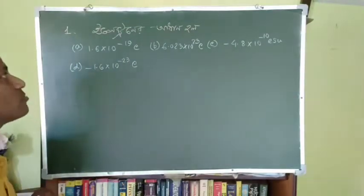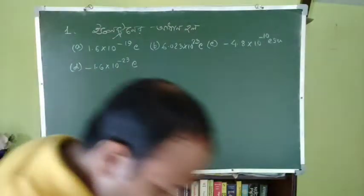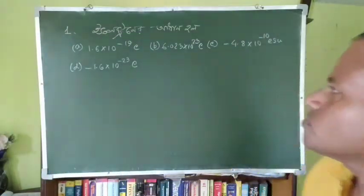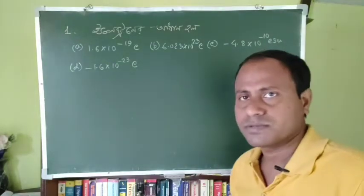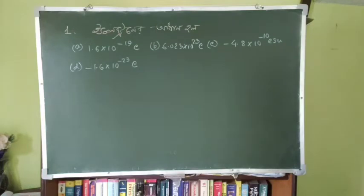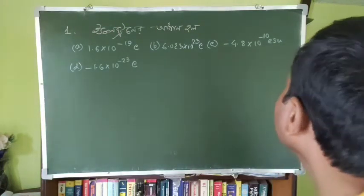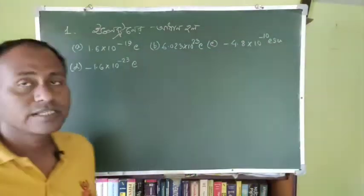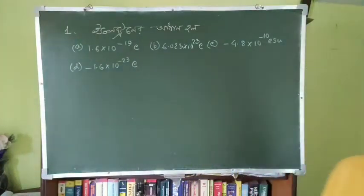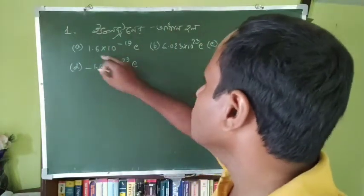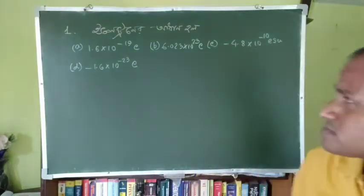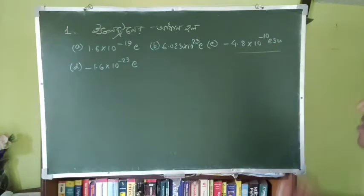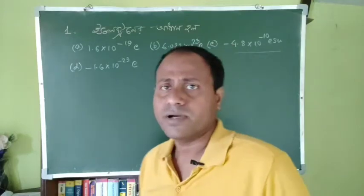In an atom, there is a nucleus and electrons. The charge of an electron is 1.6×10⁻¹⁹ coulomb. The options include: 4.8, minus 4.8, 1.6×10⁻¹⁹, and minus 1.6×10⁻²³ coulomb. Calculating the options, the electron charge is negative, so the appropriate answer is option C: minus 1.6×10⁻¹⁹ coulomb.